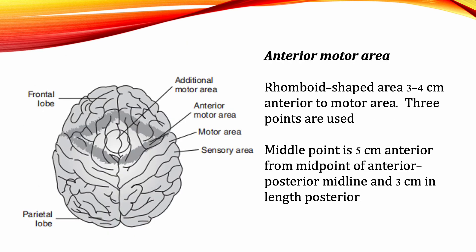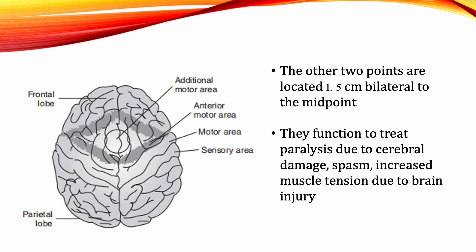Anterior Motor Area: This area is a rhomboid shape area, 3 to 4 cm anterior to the motor area. Three points are used. The middle point is 5 cm anterior from the midpoint of the anterior-posterior midline and 3 cm in length posterior. The other two points are located 1.5 cm bilateral to the midpoint. They function to treat paralysis due to cerebral damage, as well as spasm and increased muscle tension due to brain injury.